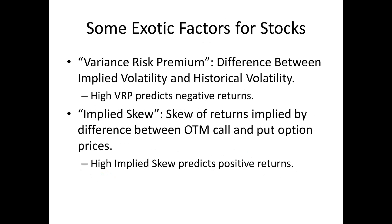The second factor is implied skew — the options counterpart of historical skewness. It is computed by taking the difference between out-of-the-money call and out-of-the-money put option prices. It turns out that higher implied skew predicts better future returns. This is reasonable: if options traders are bidding up calls relative to put options, creating skew, they expect positive returns — and it turns out they are often right.